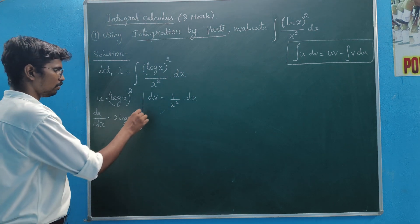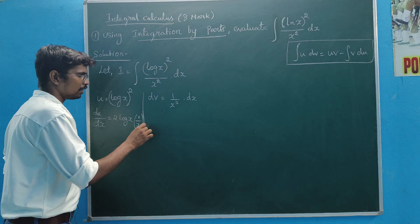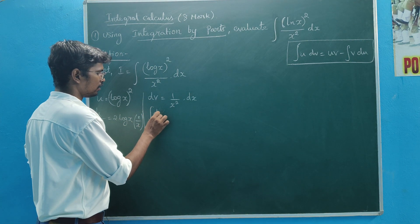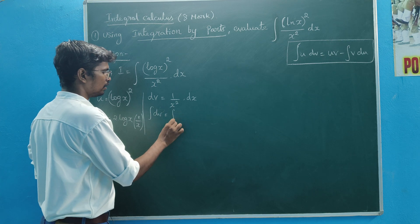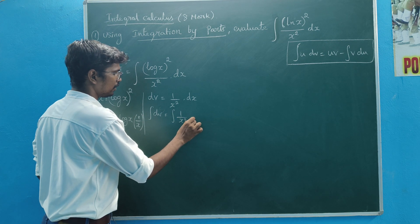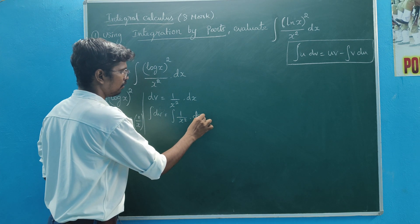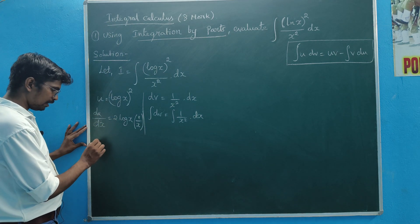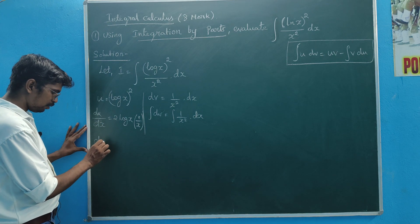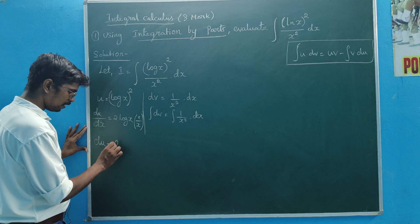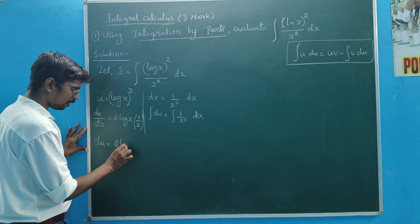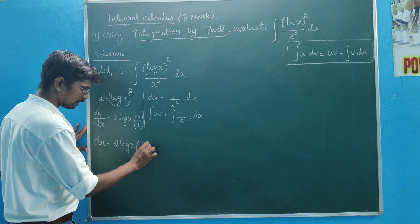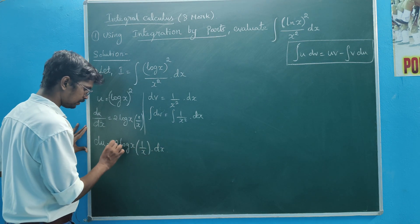One will come to x, and you will find 1 by x. So 1 by x, 1 by x is equal to v. Then we have to do the integral of 2 sides, and you will find the integral of x. Do log x into 1 by x into dx.